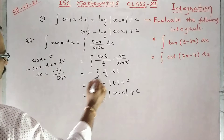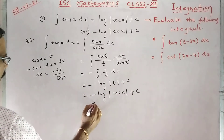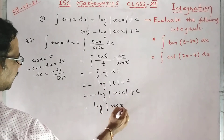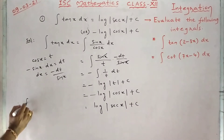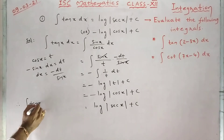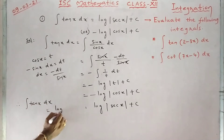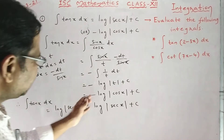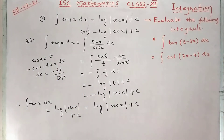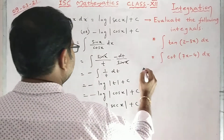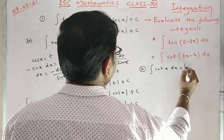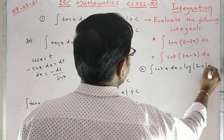Otherwise, this minus 1 can be taken to the power, so we get log mod cos x to the power minus 1, which means 1 by cos x, that is sec x. So whenever we have integral tan x dx, we can write log mod secant x plus c, or minus log mod cos x plus c. Similarly, whenever we have integral cot x dx, that can be written as log mod sin x plus c.